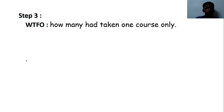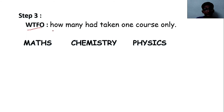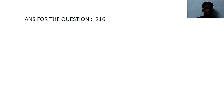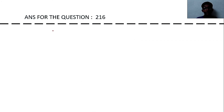Step three — WTFO (What To Find Out): we need to find how many students had taken only one course. There are three courses: maths, chemistry, and physics. There are 64 in maths, 94 in chemistry, and 58 in physics. The sum of these three numbers is 216, so the answer for this question is 216.